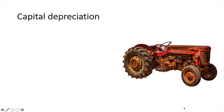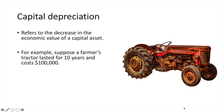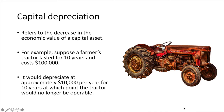First, let's define capital depreciation. Capital depreciation refers to the decrease in the economic value of a capital asset. For example, suppose a farmer's tractor lasted for 10 years and cost $100,000. That would give it an annual rate of depreciation of 10% — it would depreciate at approximately $10,000 per year for 10 years, at which point the tractor would no longer be operable.